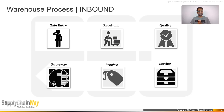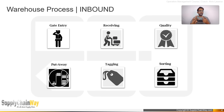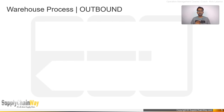To summarize the inbound process: the shipment arrives at the facility, you complete gate entry, do receiving, quality check, sorting, tagging, and put the product into storage. That completes the inbound process in the warehouse.